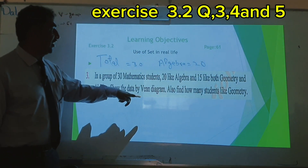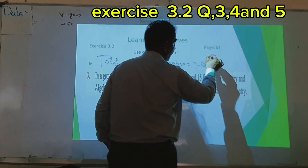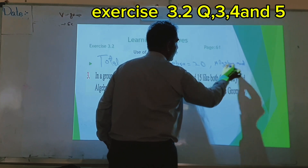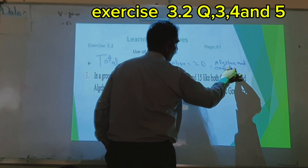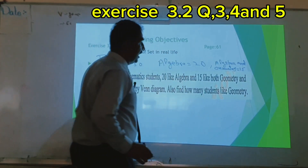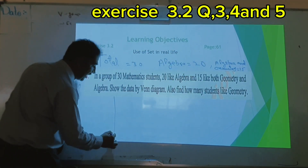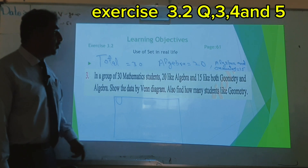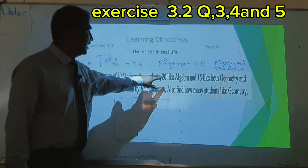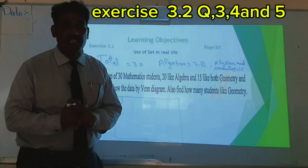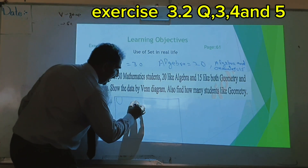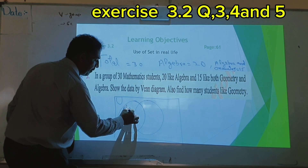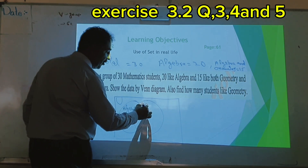Algebra and geometry — not only algebra, but algebra and geometry together. Algebra and geometry: 15 students like both. First we make a Venn diagram — a rectangle as the universal set. There are two sets: one for algebra, one for geometry. Since they have something in common, the sets overlap. This set shows algebra and this set shows geometry.